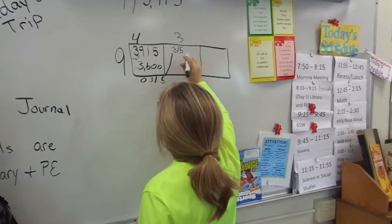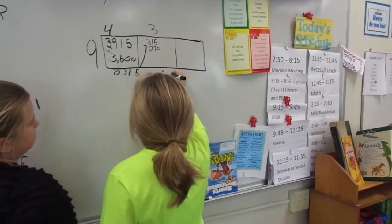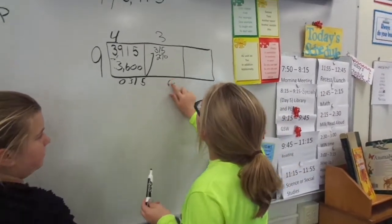Nice job. So we're taking 315 minus 270. 5 minus 0 is 5. Good.